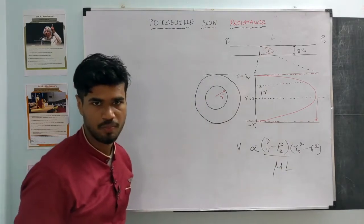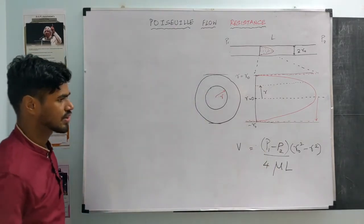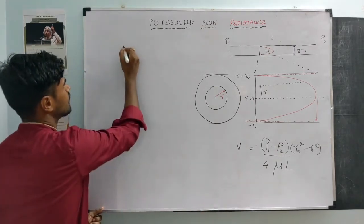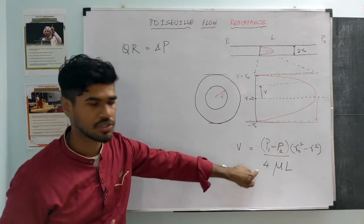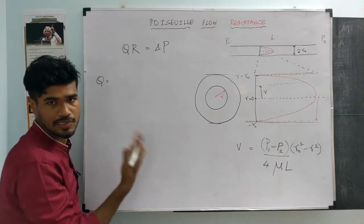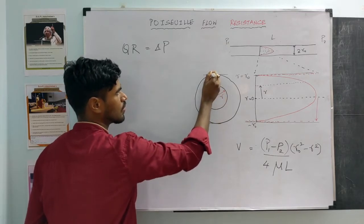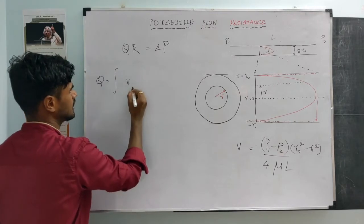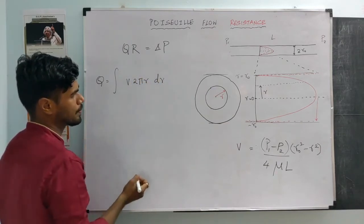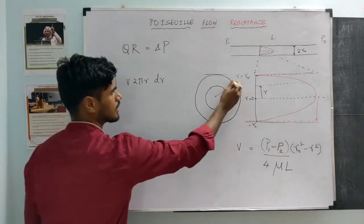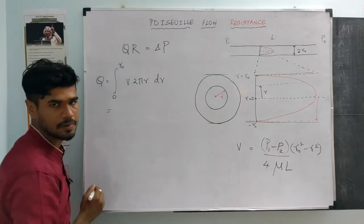Velocity is also inversely proportional to the viscosity mu, and the actual proportionality constant here is 4. Now let's try to write down the expression for flow. We know Q times R is delta P, so let's get the expression for flow using this velocity assumption. Flow is obtained by taking the velocity at any particular radius r, multiplied by the circumference 2 pi r, and integrating from 0 to the maximum radius R0.